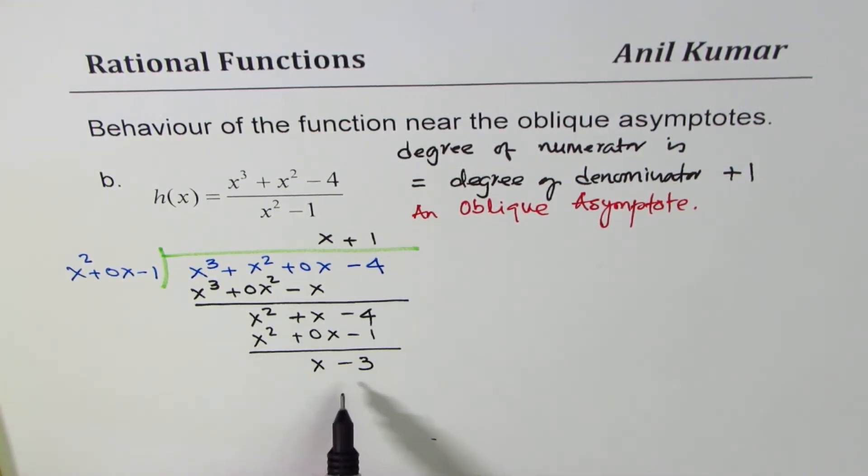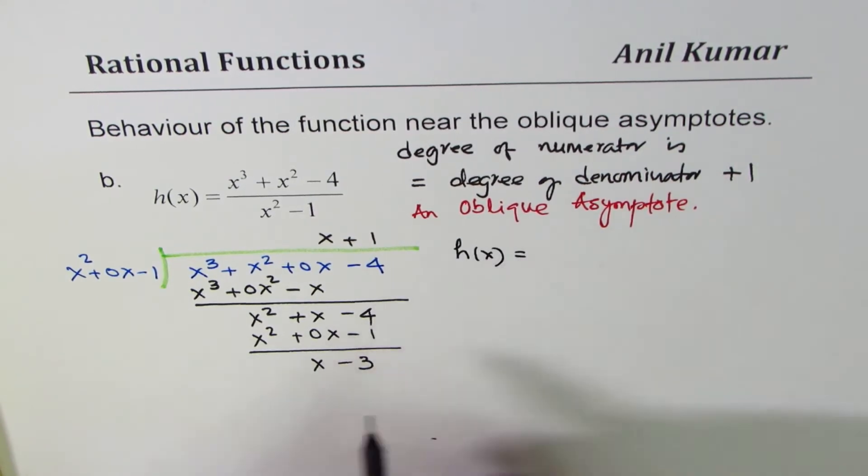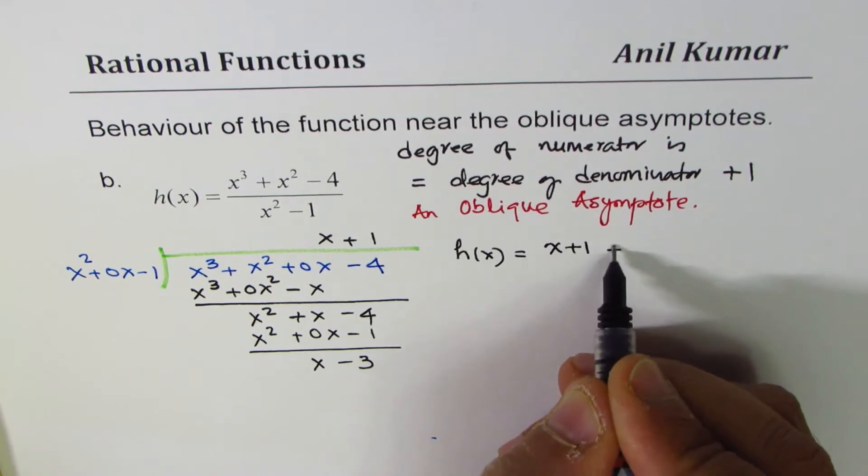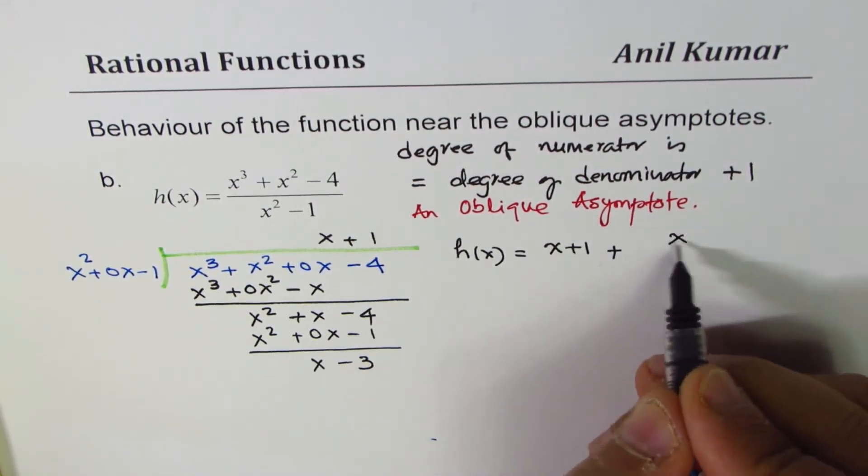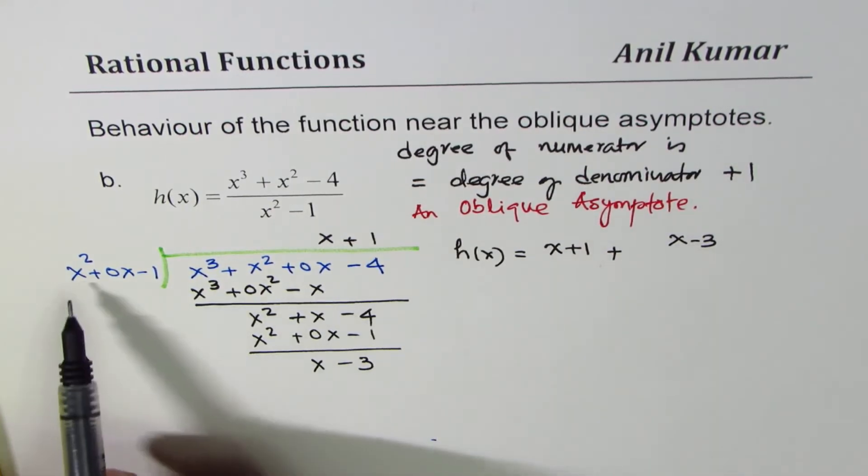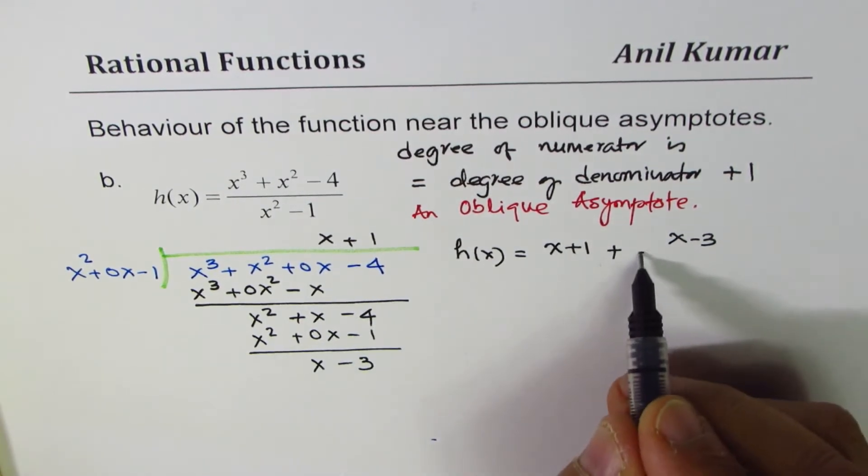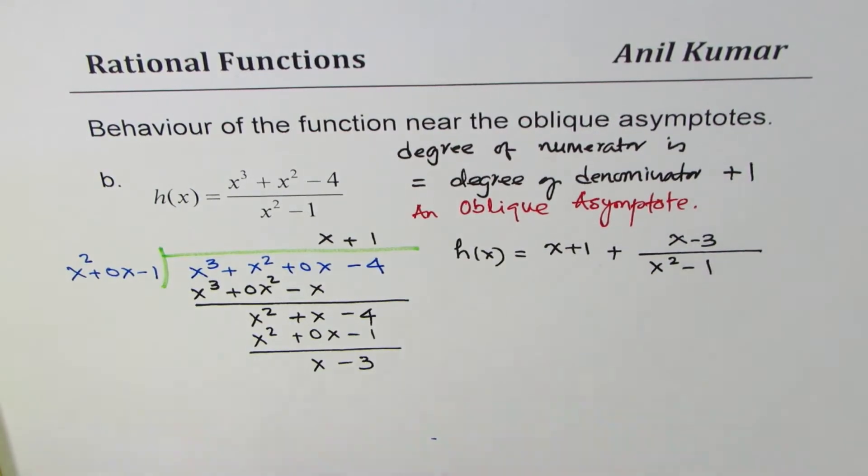Now h(x) can be written as equal to the quotient, which is x plus 1, plus the remainder, which is x minus 3, divided by x squared minus 1. As you see, when the divisor is of degree 2, the remainder could be of degree 1 or a constant.